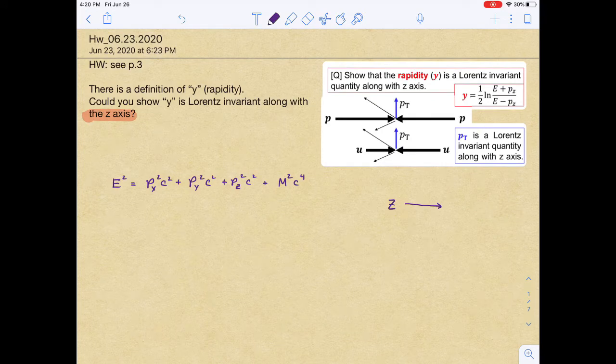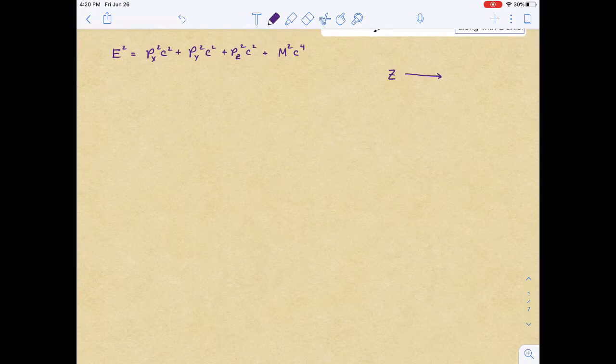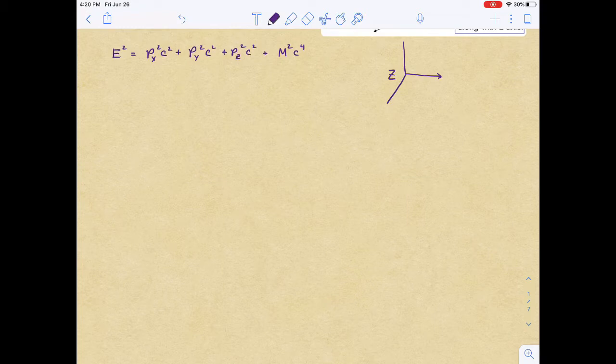We're also going to eventually show how the rapidity y is a Lorentz invariant quantity along this z-axis. Since we're looking at the z-axis, we also have x and y axes, so any displacement or momentum in the x or y direction will be invariant.